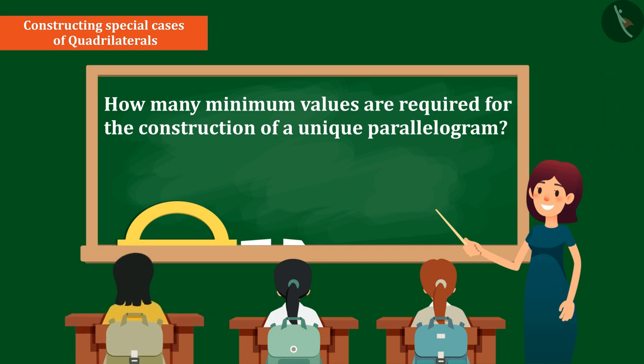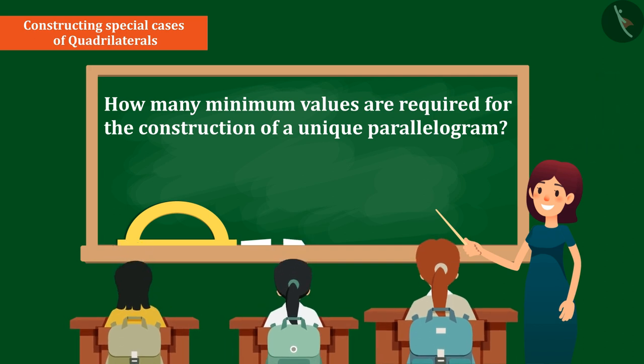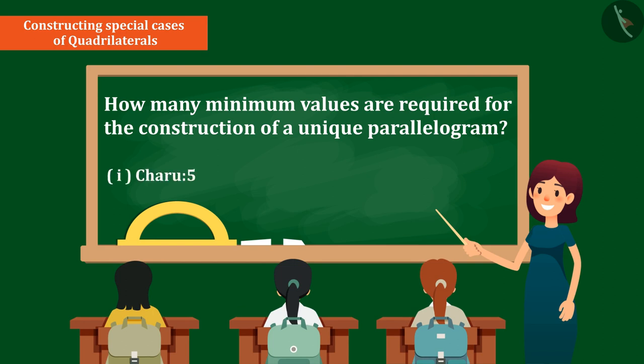The answers of Charu, Meera and Sonia are as follows. Charu says 5, Meera says 2, Sonia says 3. Can you tell whose answer is correct and why?